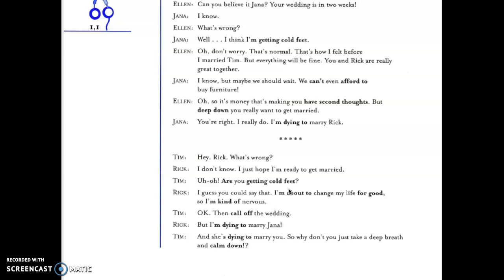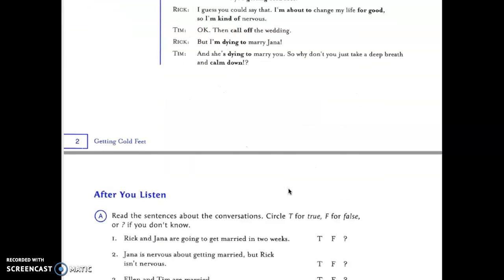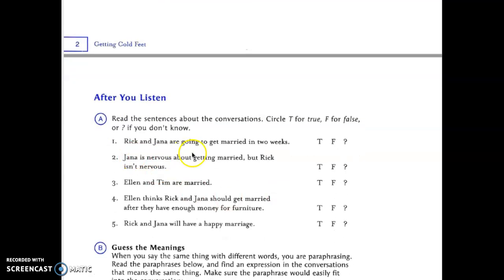Then call off the wedding. But I'm dying to marry Jenna and she's dying to marry you, so why don't you just take a deep breath and calm down. So Rick and Jenna are going to get married in two weeks. True. Jenna is nervous about getting married but Rick is not nervous. They're both nervous.